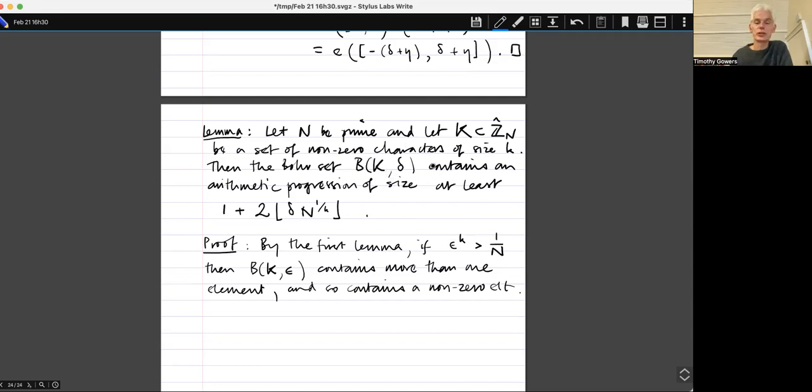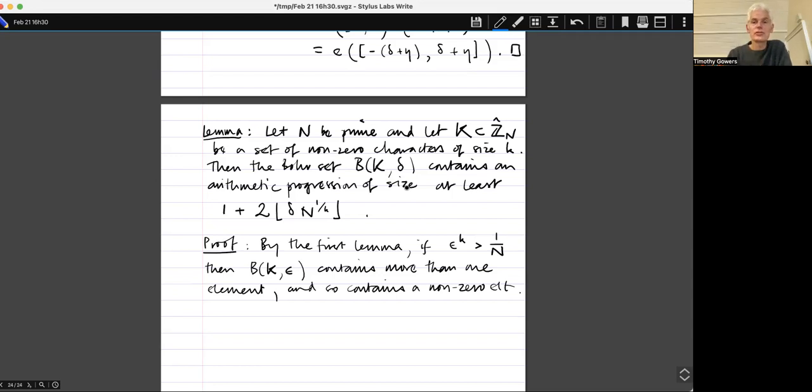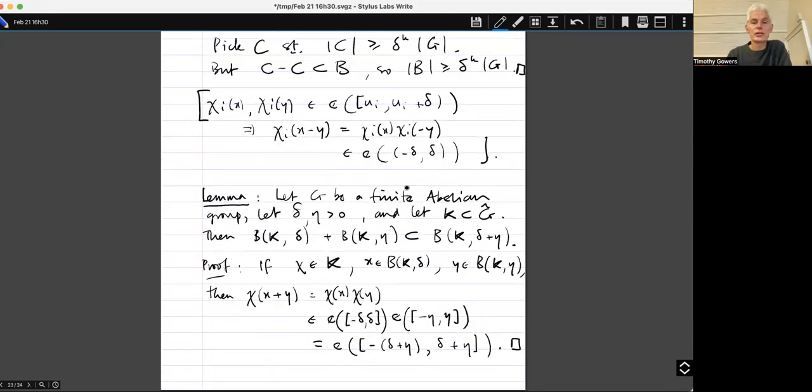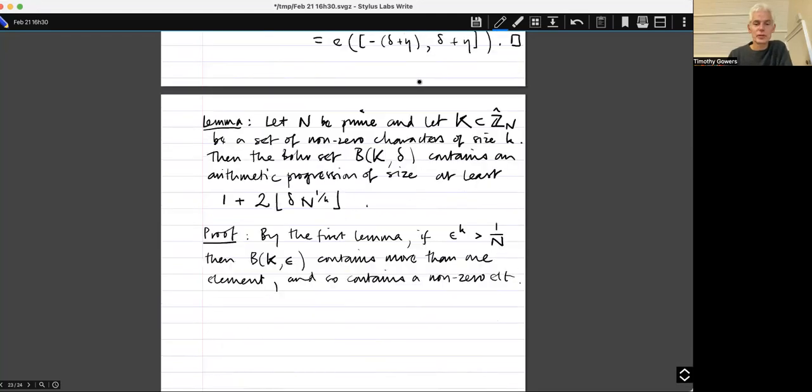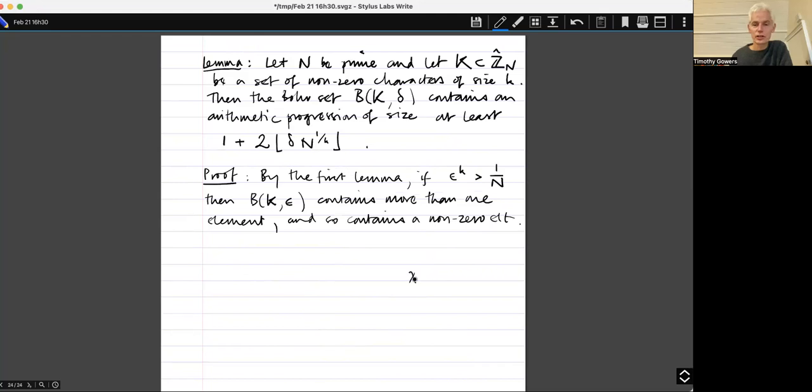The Bohr sets will get strictly smaller. And if you think about the conditions that an element of the Bohr set has to satisfy, they're all of the form Chi i of x belongs to, well, I'm going to write it down here. They're all going to be of the form Chi i of X belongs to E of minus epsilon epsilon.